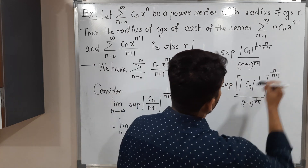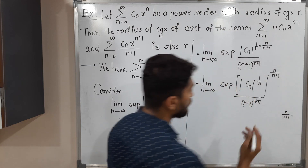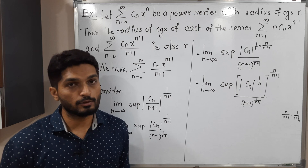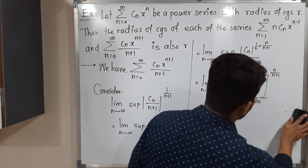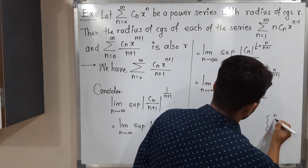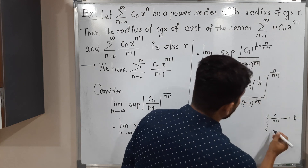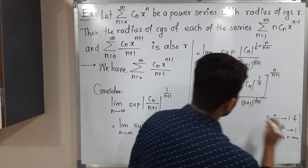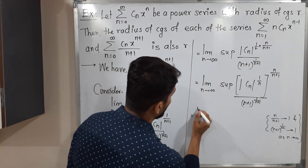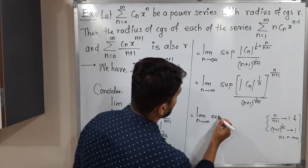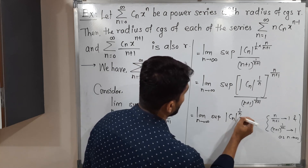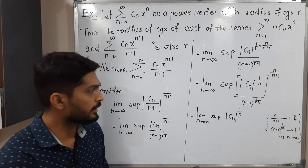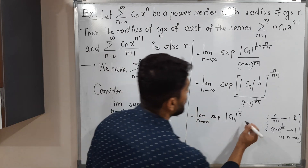The power n upon n plus 1 tends to 1 as n tends to infinity (dividing numerator and denominator by n gives 1 upon 1 plus 1 by n, which goes to 1). And n plus 1 raised to 1 by n plus 1 also goes to 1 as n tends to infinity. Applying the limit, both these factors equal 1, and what remains is the limit n tends to infinity of the supremum of mod Cn raised to 1 by n, which equals alpha.